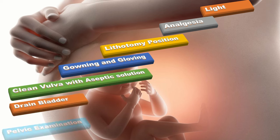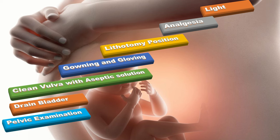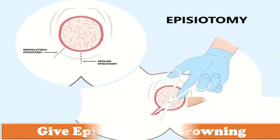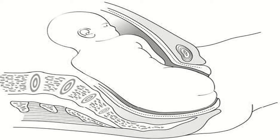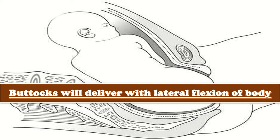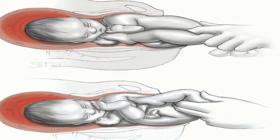I will do an appropriate pelvic examination to assess the position of the presenting parts. At crowning of the breech, I will give an episiotomy as indicated. The buttocks will deliver with lateral flexion of the body spontaneously. I will hold the buttocks in one hand and assess the attitude of the legs with the other hand. If the legs are flexed, they will deliver spontaneously or I will hook them out.